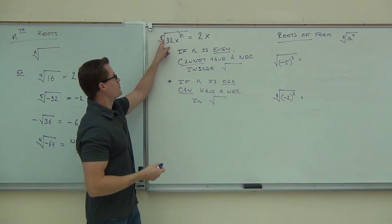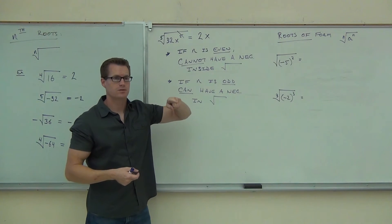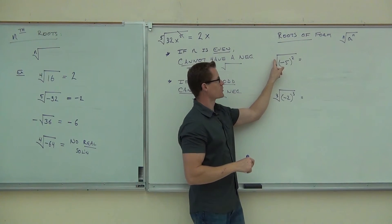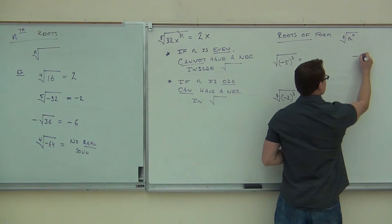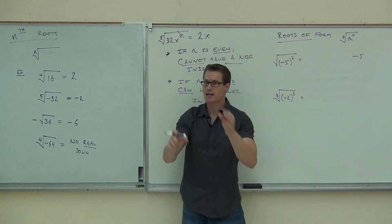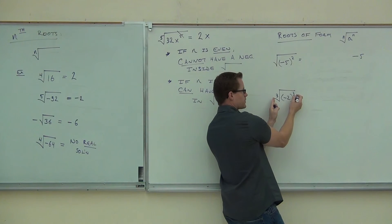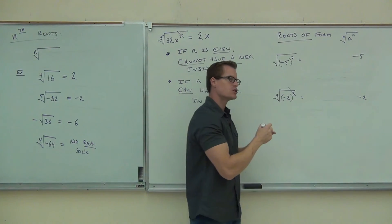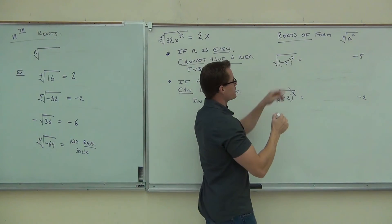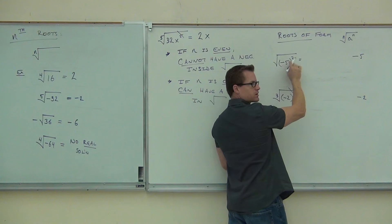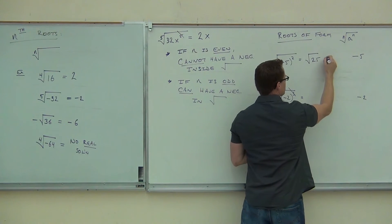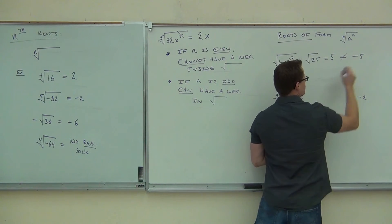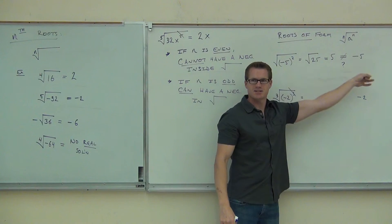You are okay that whenever a power matched the root, we could just cross it out. So in this case — square root of negative 5 squared — that's a square root and that's a square, so I should be able to cross that out and get negative 5 out of that. And the cube root of negative 2 cubed — we should be able to cross out the third power and the third root and get negative 2 out. However, I need you to know something. If you do the order of operations: what's negative 5 squared? 25. That's the square root of 25. What's the square root of 25? 5. Are these things equal? No.